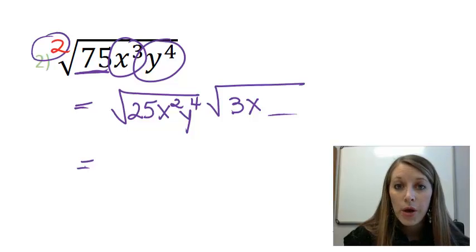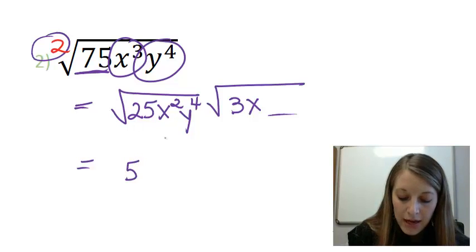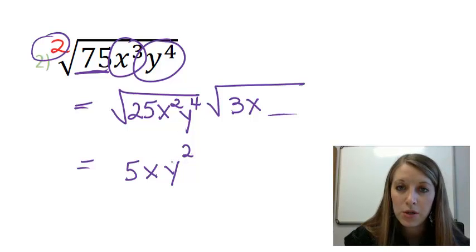And since it's all squares, that should all come out evenly. That's the reason you split it up in that format. So the square root of 25 gives me 5. The square root of x squared gives you x because the square and the square root cancels out. And the square root of y to the fourth gives you y squared because 4 divided by 2 gives me 2.